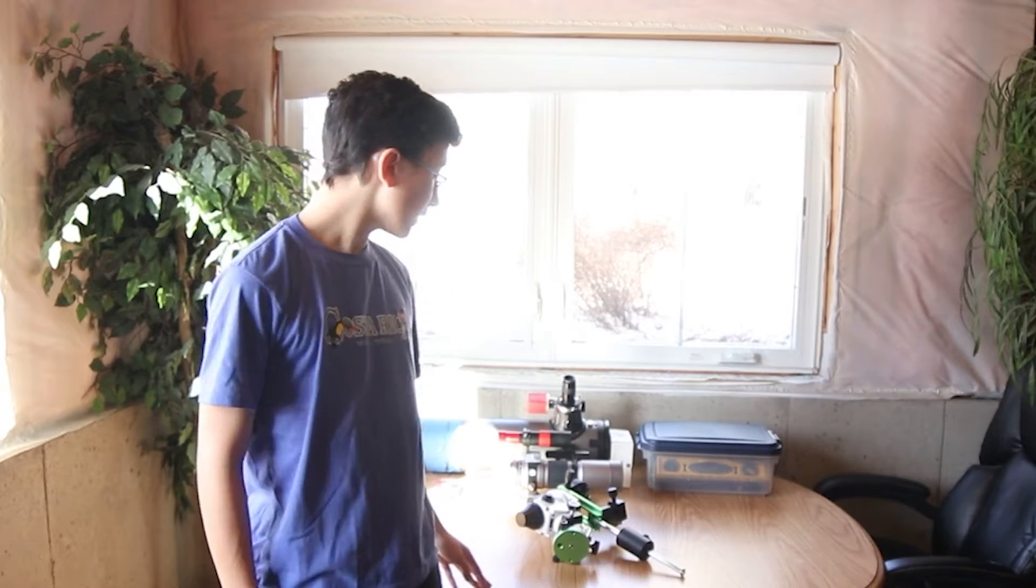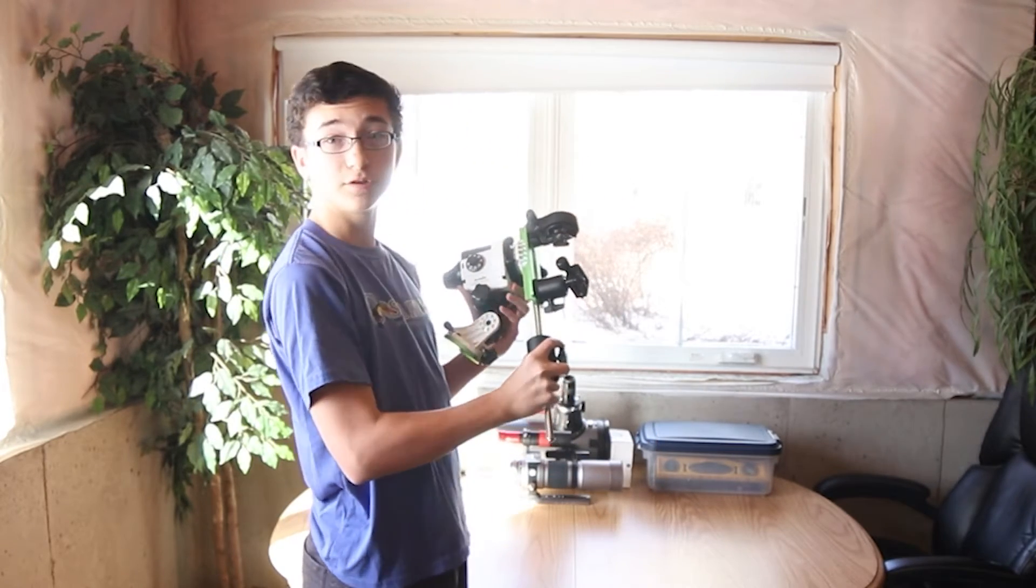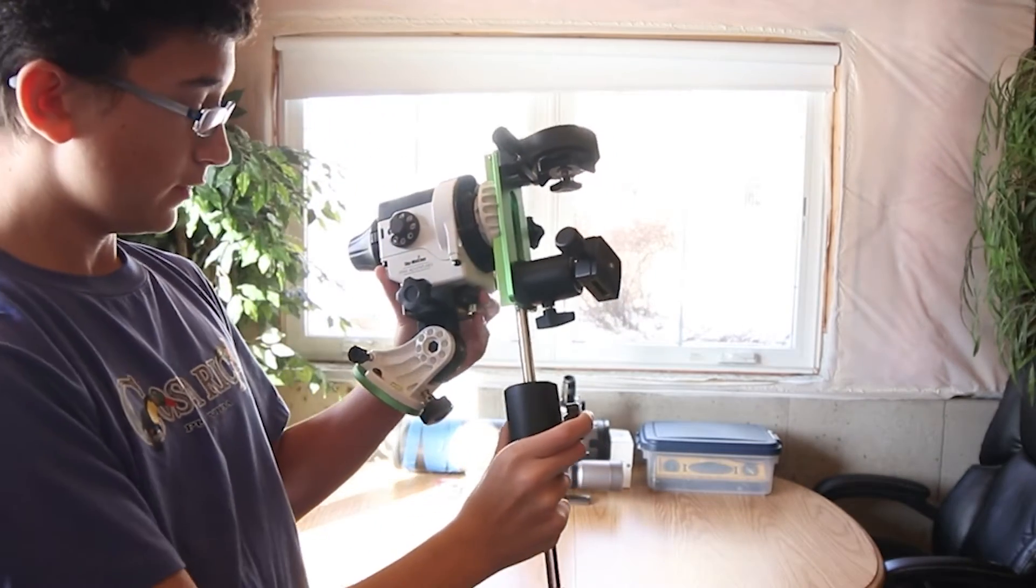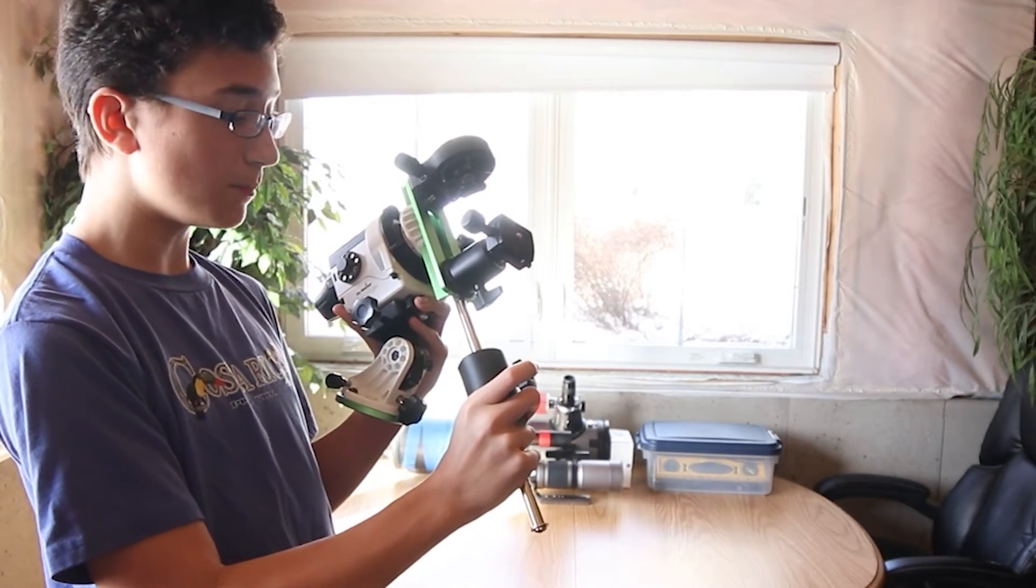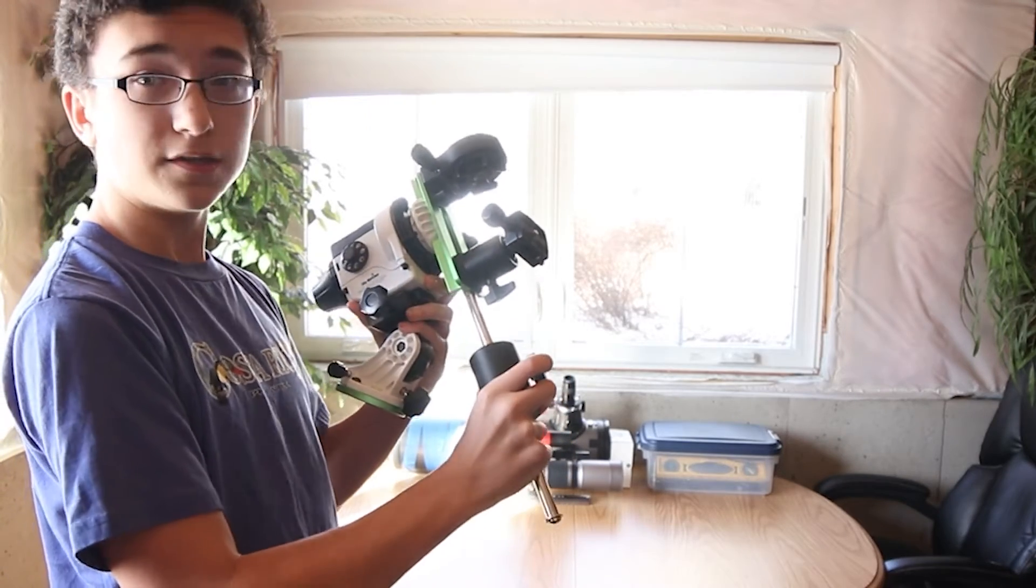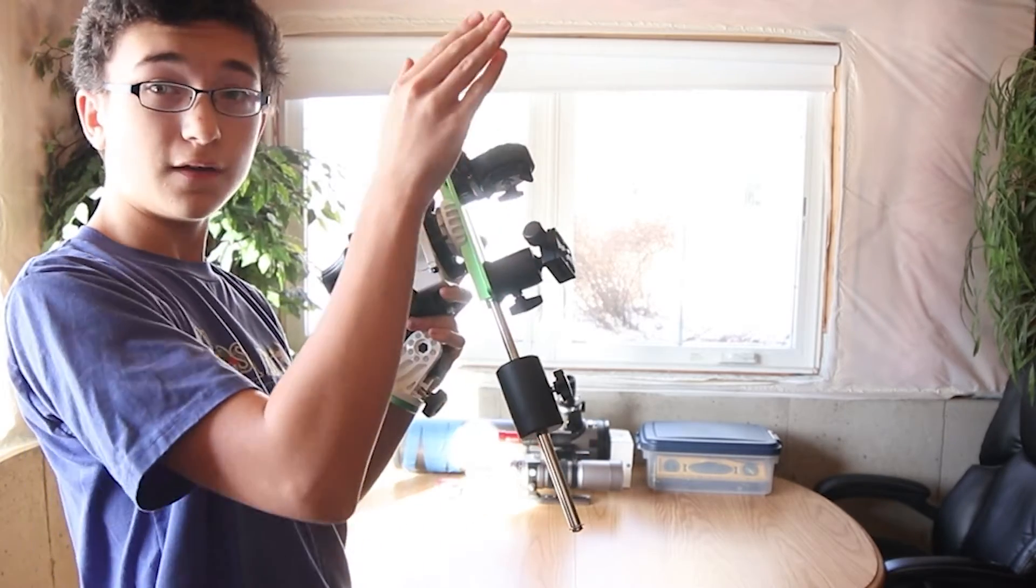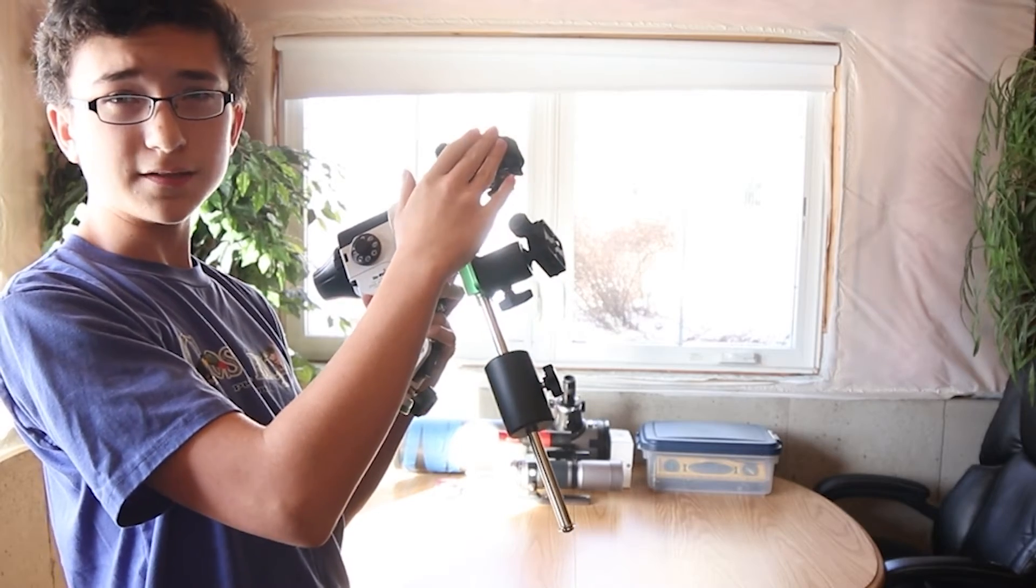My dad and I wanted to start getting into astrophotography because we saw how cool it could be. My dad actually got the Sky-Watcher Star Adventurer Pro, a little star tracker that you put on a tripod pointing at the North Star Polaris. This tracks the rotation of the sky and you can put a small telescope or lens on here to image deep sky objects.